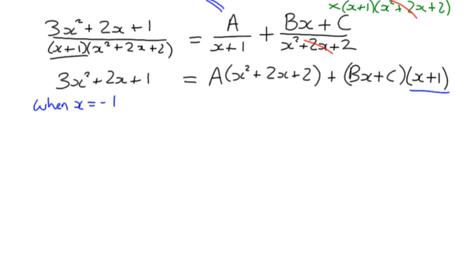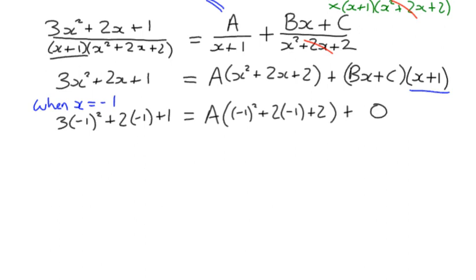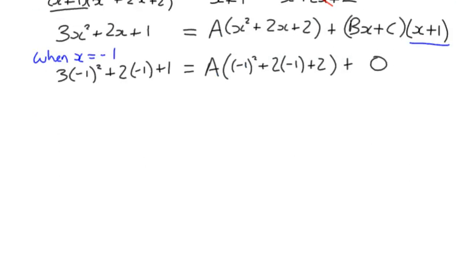So if x is negative 1, we're going to have 3 lots of negative 1 squared plus 2 lots of negative 1 plus 1 on the left. On the right-hand side, we're going to have A multiplied by negative 1 squared plus 2 times negative 1 plus 2. And then we're going to have our 0 term here. You can do more of that in your head. You don't have to necessarily write it out as fully the substitution like that. But I'm doing it just now just to make sure you understand where the negative ones are going. And it does sometimes help to make sure we don't make mistakes.